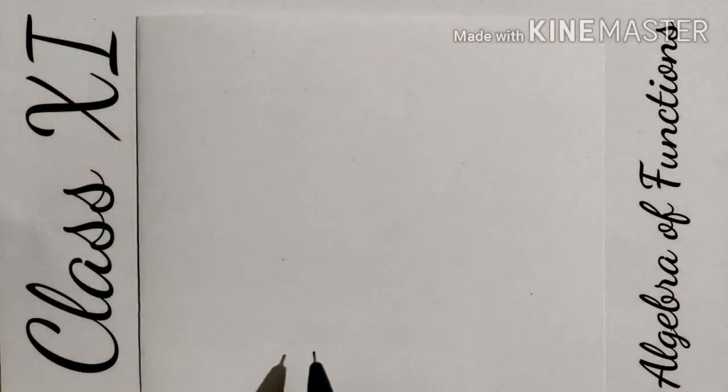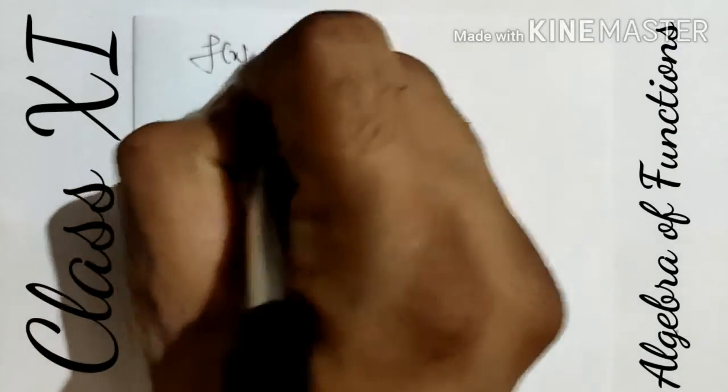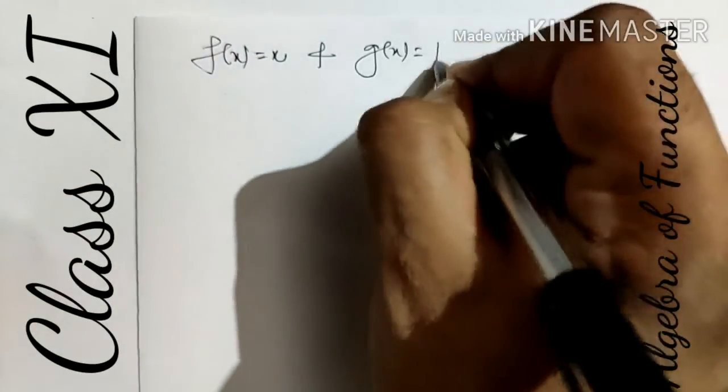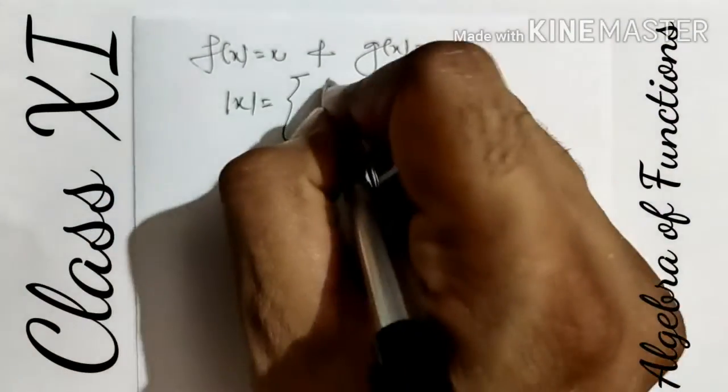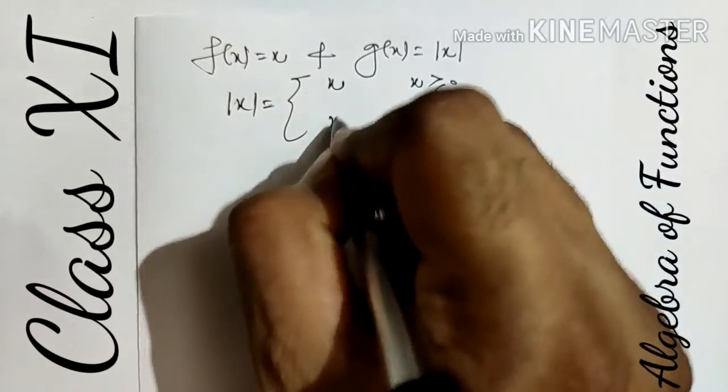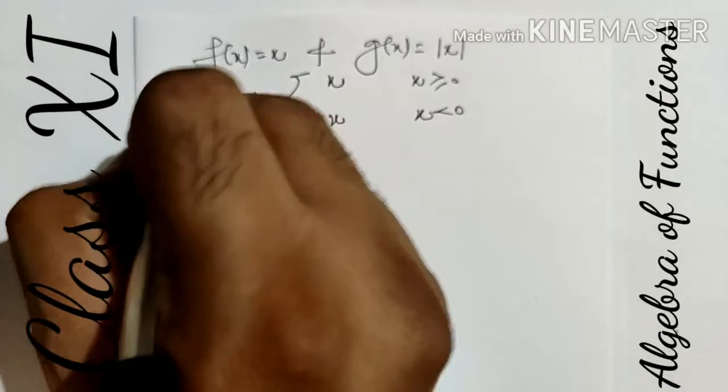Another example: define the sum and difference of the identity function and modulus function. We know that the modulus function g(x) = |x| has two values: x when x ≥ 0, and -x when x < 0.